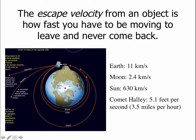The Moon is smaller than the Earth, it has less mass than the Earth, and so you don't have to go nearly as fast to leave the Moon's gravity and never return, 2.4 kilometers a second. The Sun is a lot more massive than the Earth, a lot bigger than the Earth, and for the Sun you need to be going at 630 kilometers a second to leave it and never come back, at least if you were standing on the Sun.